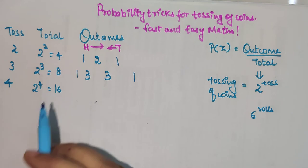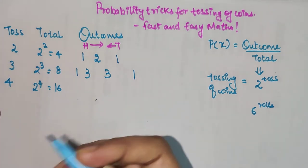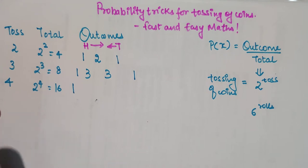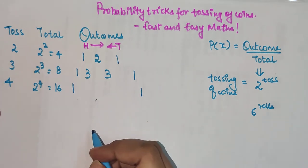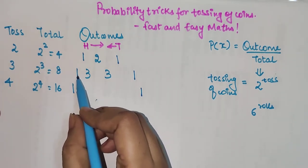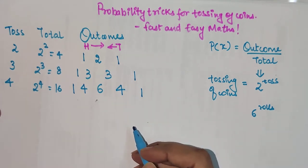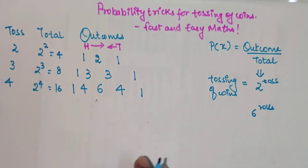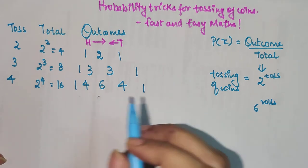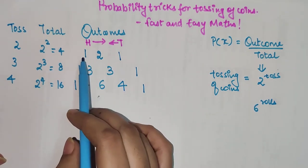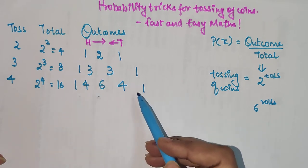So the outcomes when a coin is tossed three times are 1, 3, 3, 1. Now for four tosses: all four heads is 1, all four tails is 1, then 1 plus 3 is 4, 3 plus 3 is 6, and 3 plus 1 is 4. So the outcomes for four tosses are 1, 4, 6, 4, 1. You simply keep adding adjacent numbers to get the row below — this is easy to remember.